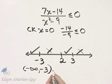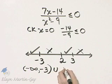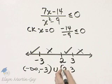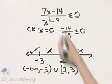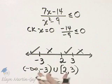So, I'll have a parenthesis here, union, and then I go from 2 to 3. 2 can have a bracket, that's okay. 3 cannot have a bracket, it came from the denominator. And there is my solution.